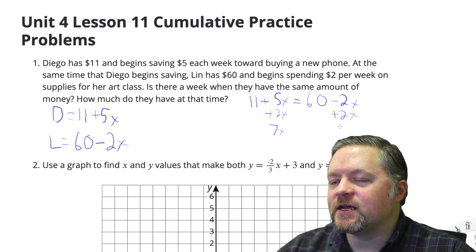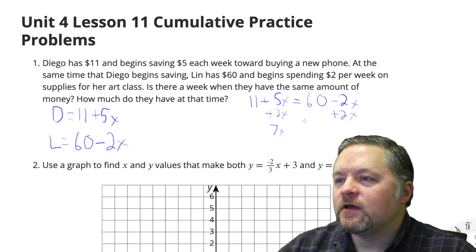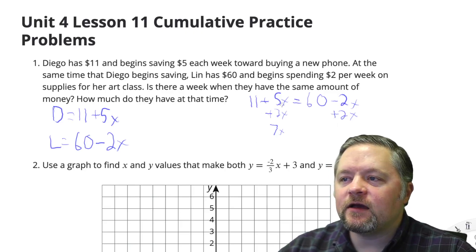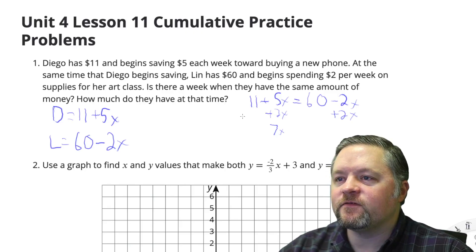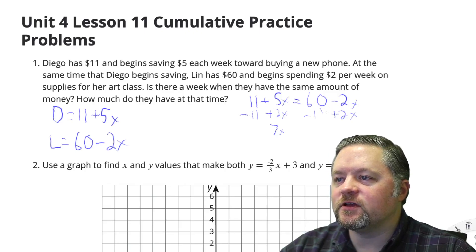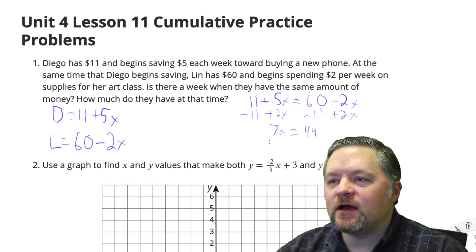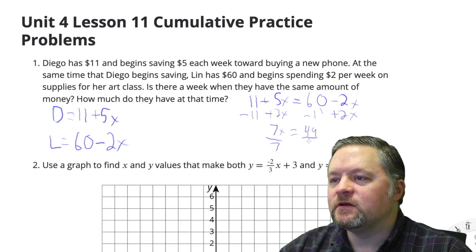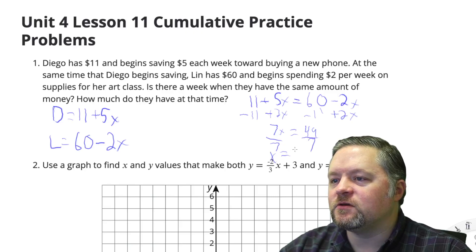Negative 2x plus 2x cancels, giving us all the x's on the left. Now let's get rid of the 11 on the left by subtracting 11 from both sides. 60 minus 11 is 49. So 7x equals 49. Divide each side by 7, and x equals 7.